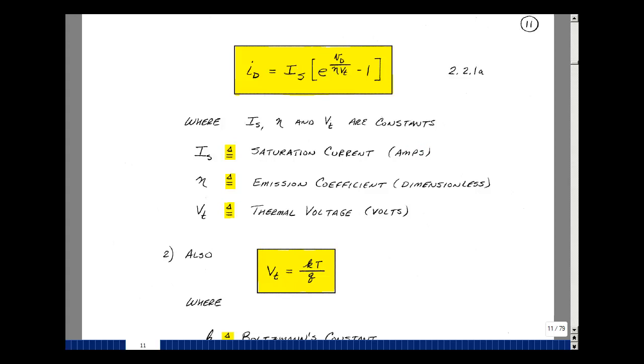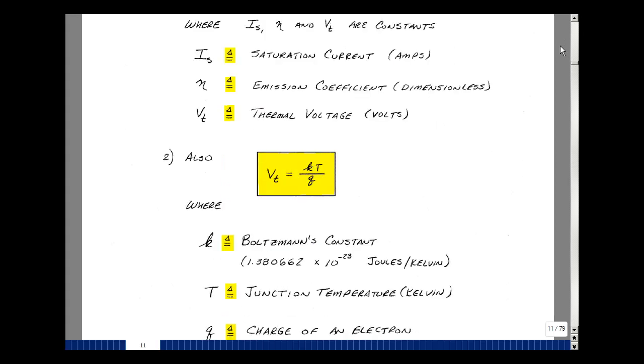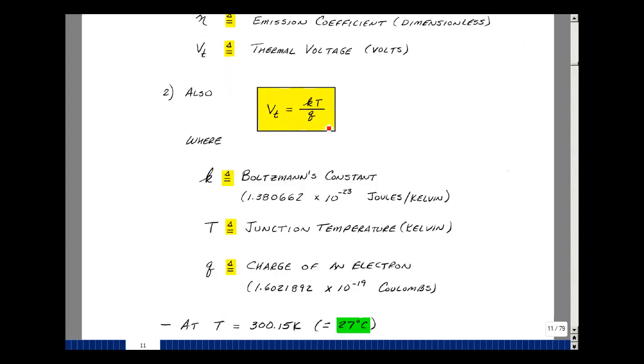He also figured out that the thermal voltage was related to temperature, and of course that's why it's named that. That's equal to kT over q, where k is Boltzmann's constant, which is approximately 1.380662 times 10 to the minus 23 joules per kelvin. Temperature in this case is in degrees kelvin, and q is the charge on an electron. That's roughly 1.6021892 times 10 to the minus 19th coulombs.